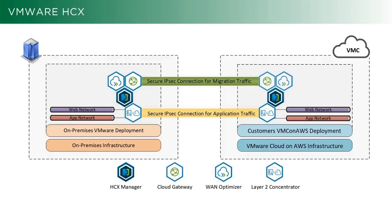The four pieces we have are HCX manager — the management plane — and then our cloud gateway and WAN optimizer, which are in charge of replication, disaster recovery, and migration. And the layer 2 extension appliance, or concatenator, is what stretches layer 2 so you don't have to re-IP.